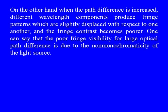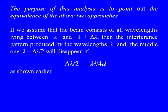This is an important point. When the path difference between the two interfering beams is zero or very small, the different wavelength components produce fringes that superimpose on one another and the contrast is good. On the other hand, when the path difference is increased, the different wavelength components produce fringe patterns which are slightly displaced with respect to one another, and the fringe contrast becomes poorer. One can say that the poor fringe visibility for large optical path difference is due to the non-monochromaticity of the light source.